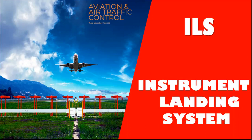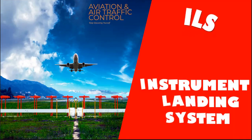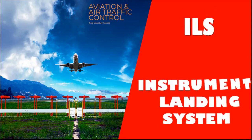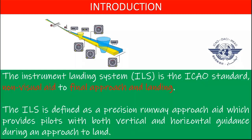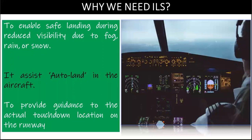Hello viewers. In this presentation we will discuss the Instrument Landing System. The Instrument Landing System, ILS, is the International Civil Aviation Organization standard non-visual aid to final approach and landing. ILS is defined as a Precision Runway Approach Aid which provides pilots with both vertical and horizontal guidance during an approach to land. It is used to enable safe landing during reduced visibility due to fog, rain, or snow.